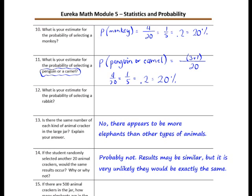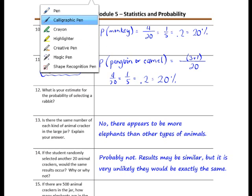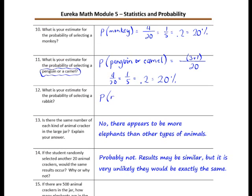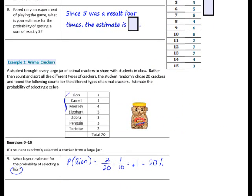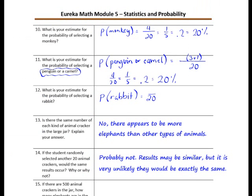Number 12: what is your estimate for the probability of selecting a rabbit? We write that as P(rabbit). We know 20 crackers were drawn from the jar, and we look at how many times a rabbit was selected. A rabbit was not selected at all — 0 times. So 0 divided by 20 is 0. The probability of selecting a rabbit is 0. Do you remember what kind of event that is when the probability is 0? It is an impossible event.